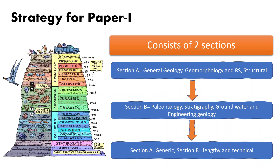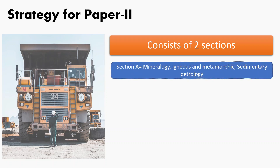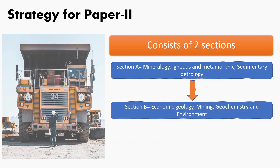Additionally, it is easier to prepare diagrams and charts from section A topics, which may give you an edge in presentation and improvisation. Like paper one, paper two also consists of six individual topics divided into two sections. Section A consists of mineralogy, igneous and metamorphic petrology, and sedimentary petrology. Section B comprises economic geology, mining geology, geochemistry, and environmental geology. The mark distribution and number of questions to be answered remain the same — five questions in total.